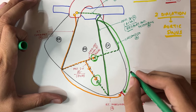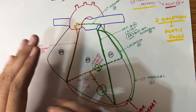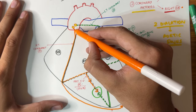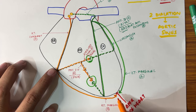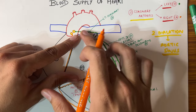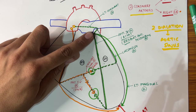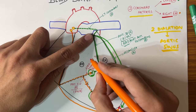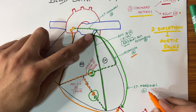Apart from these branches, the left coronary artery also gives a left marginal artery, which goes to supply the apex of the heart — just like the right marginal artery came from the right coronary artery. So this diagram gives you the whole blood supply of the heart. The left coronary artery gives: the anterior interventricular artery (LAD), the circumflex artery, and the left marginal artery.